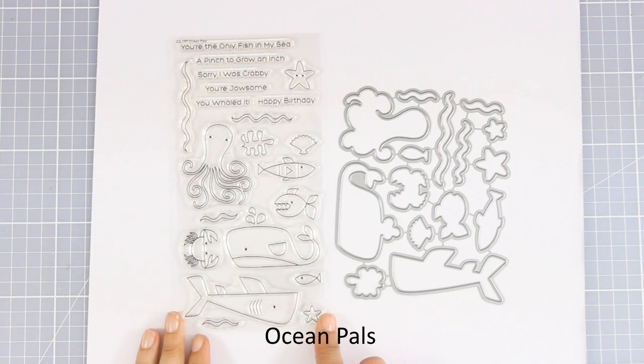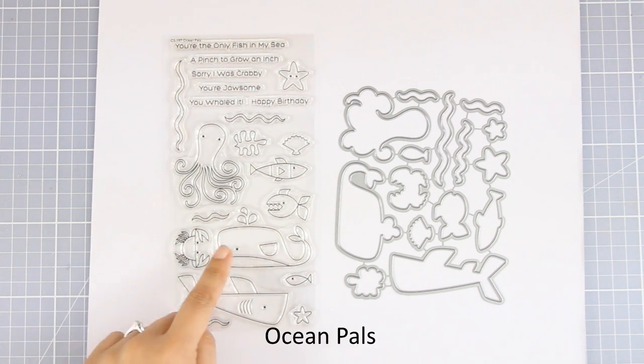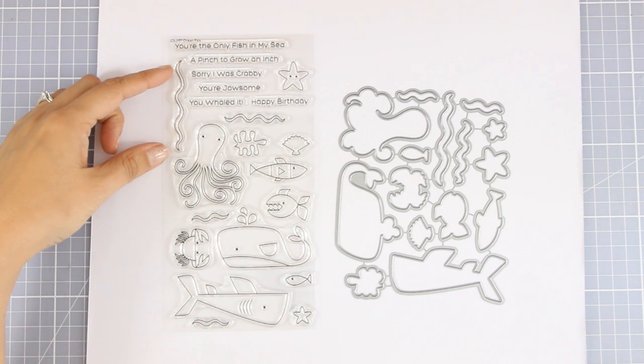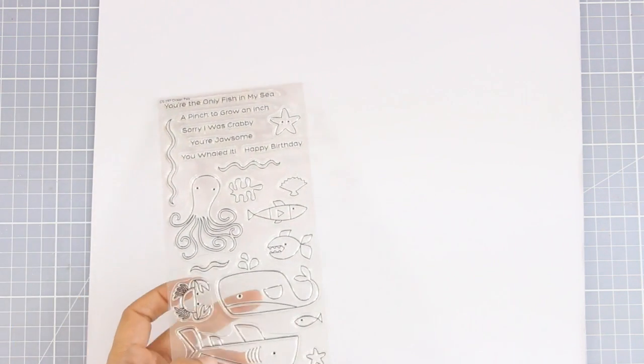In the same theme there is this 4x8 large stamp set which is called Ocean Pulse. There are some beautiful designs here - a shark, a whale, a crab, an octopus - and lovely little sentiments to go with it such as 'You are the only fish in my sea,' 'a pinch to grow an inch,' 'you are jawsome,' and many more fun sentiments.